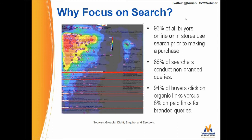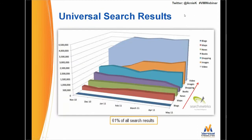Very few people click on the ads, and the reason I say amazingly is that Google's business model derives revenue on a small percentage of searches. Some stats: 93% of all buyers online or in-store use search prior to making a purchase. 86% of those searchers conduct non-branded queries — they're not searching for Vertical Measures or Zappos or Amazon, they're searching with non-branded terms. And 94% of buyers click on the organic links versus the paid links.